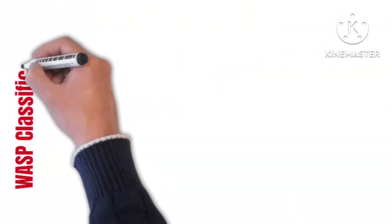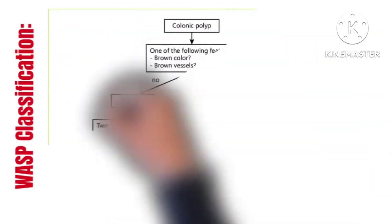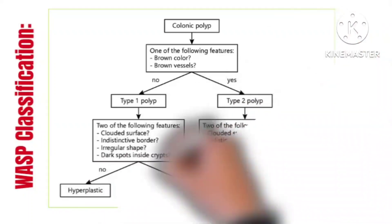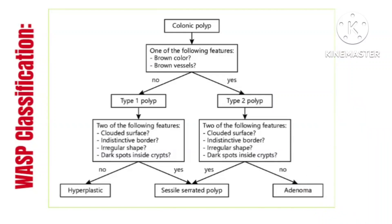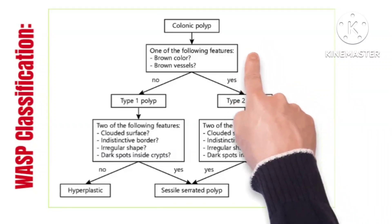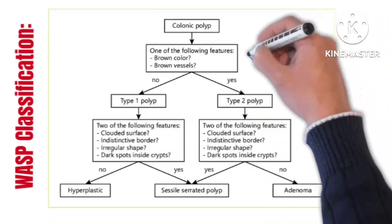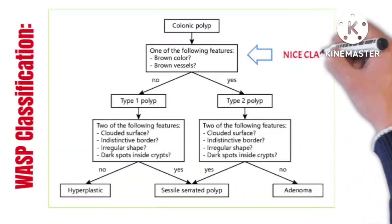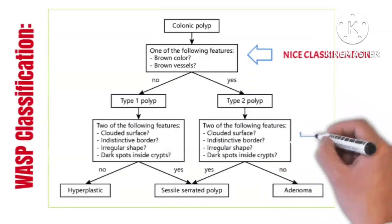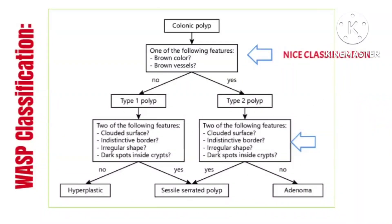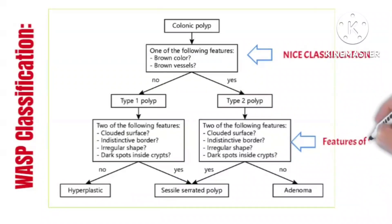This is the algorithm of WASP classification, which classifies colonic polyps according to NICE classification features — specifically the brown color of the lesion more than the mucosal background or brown vessels inside the lesion — to classify the lesion as either NICE type 1 or NICE type 2. Then, using the features of the serrated polyp, the polyp is further classified as hyperplastic, serrated, or adenomatous.